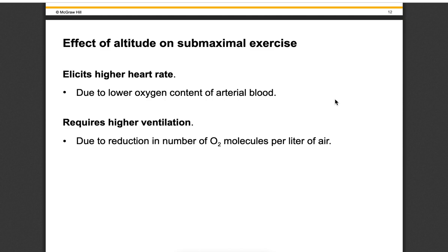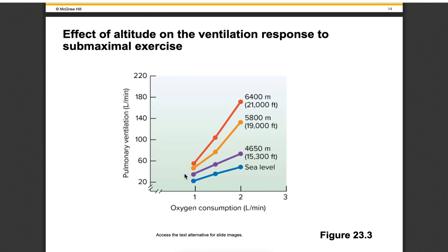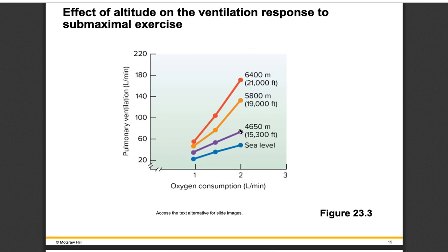With sub-maximal exercise at altitude, you get a higher heart rate even during normal training-level exercise, because your heart has to move more blood to deliver the same amount of oxygen as at sea level. You also require higher ventilation at the same workload, because you have to move more air to get the same number of oxygen molecules since the pressure isn't as high. Heart rate at different levels of oxygen consumption is higher at altitude but follows a similar trend - it just shifts upward. Ventilation is also much greater at altitude, especially at higher intensities, requiring more and more effort to keep up with demand.